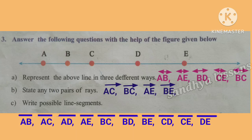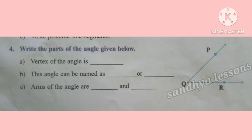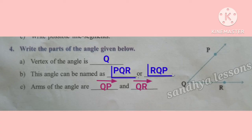C: write possible line segments. Line segment AB, AC, AD, AE, BC, BD, BE, CD, CE, DE. Fourth problem: write the parts of the angle given below. Vertex of the angle is Q. This angle can be named as angle PQR or angle RQP. Arms of the angle are ray QP and ray QR.